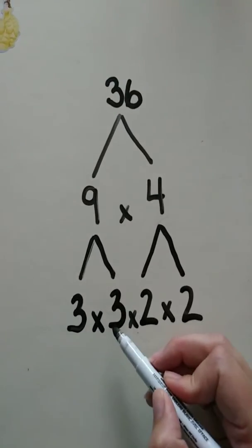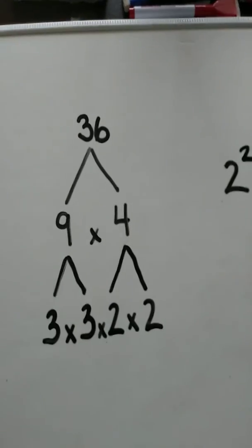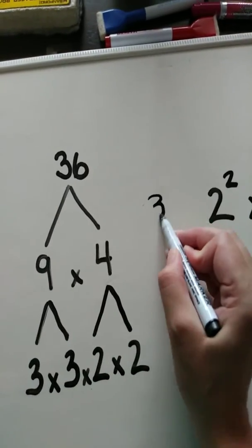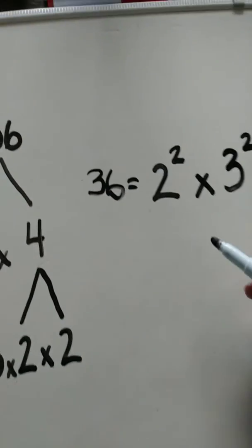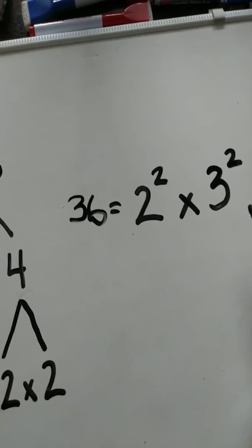Times 3 times 3, which is also known as 3 to the power of 2. There it is. So, you can say that 36 equals 2 to the power of 2 times 3 to the power of 2.